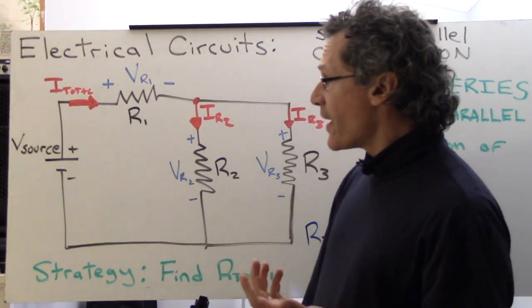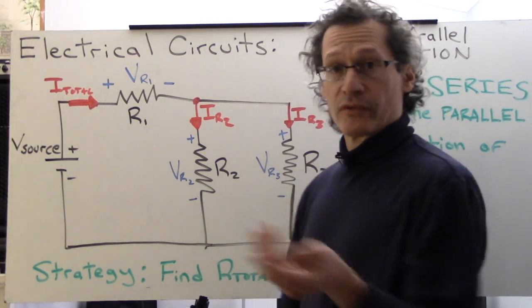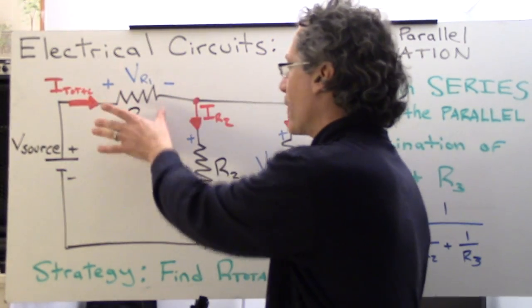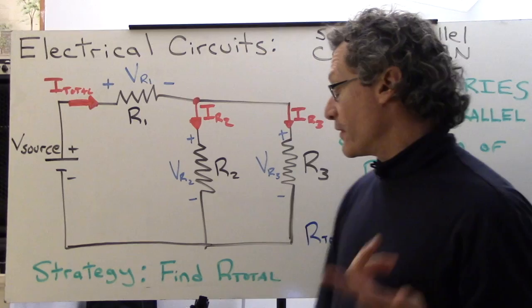So we got to split the current and also we have voltage loops as well where V source, V R1, V R2 make one loop, V source, V R1, and V R3 make the second loop.